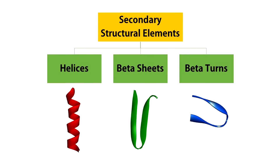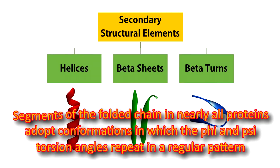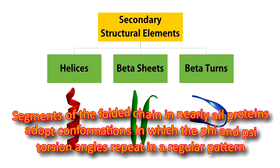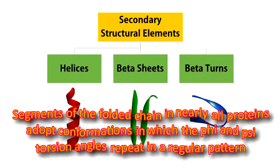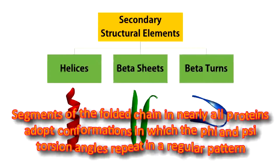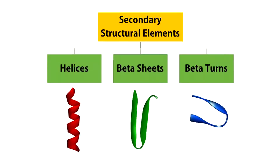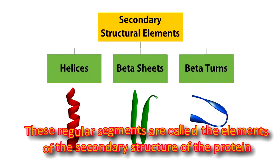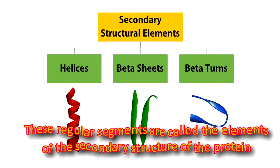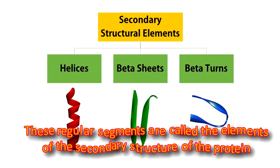Although proteins are linear polymers, most soluble proteins are globular and have a tightly packed core consisting primarily of hydrophobic amino acids. Segments of the folded chain in nearly all proteins adopt conformations in which the phi and psi torsion angles repeat in a regular pattern. These regular segments are called the elements of secondary structure of the protein.